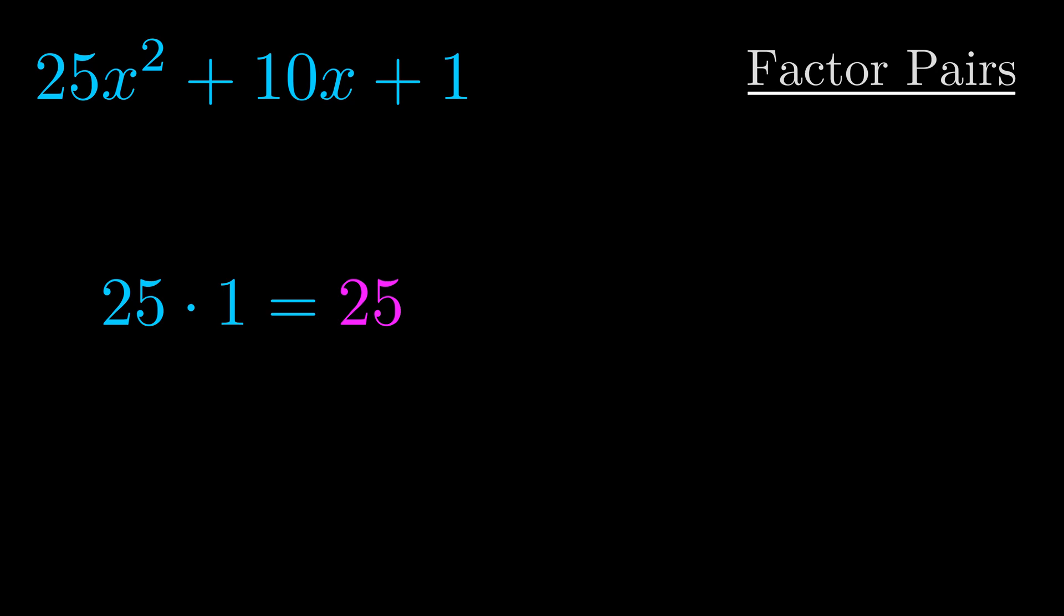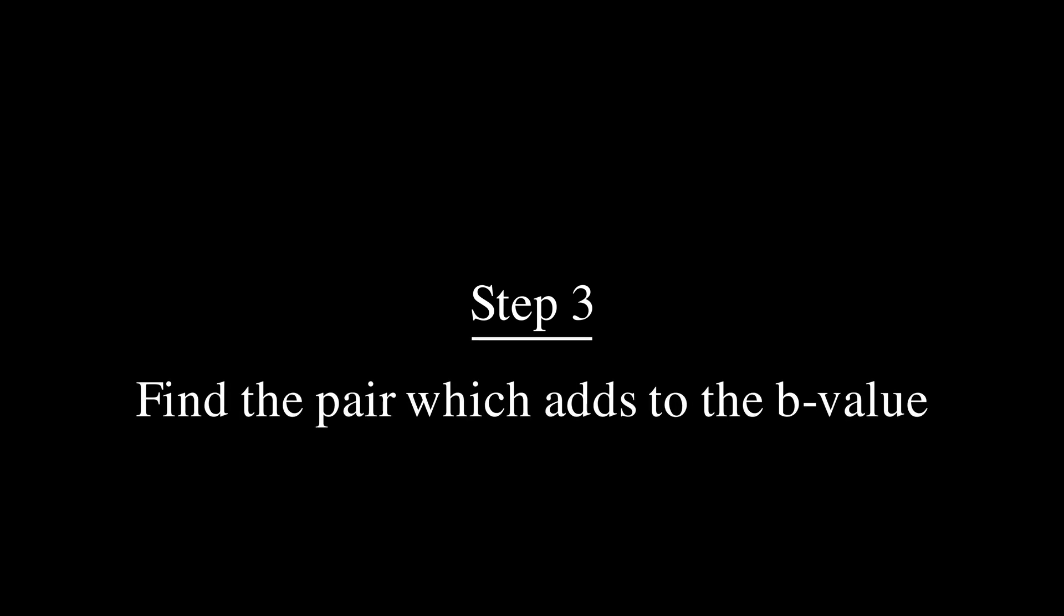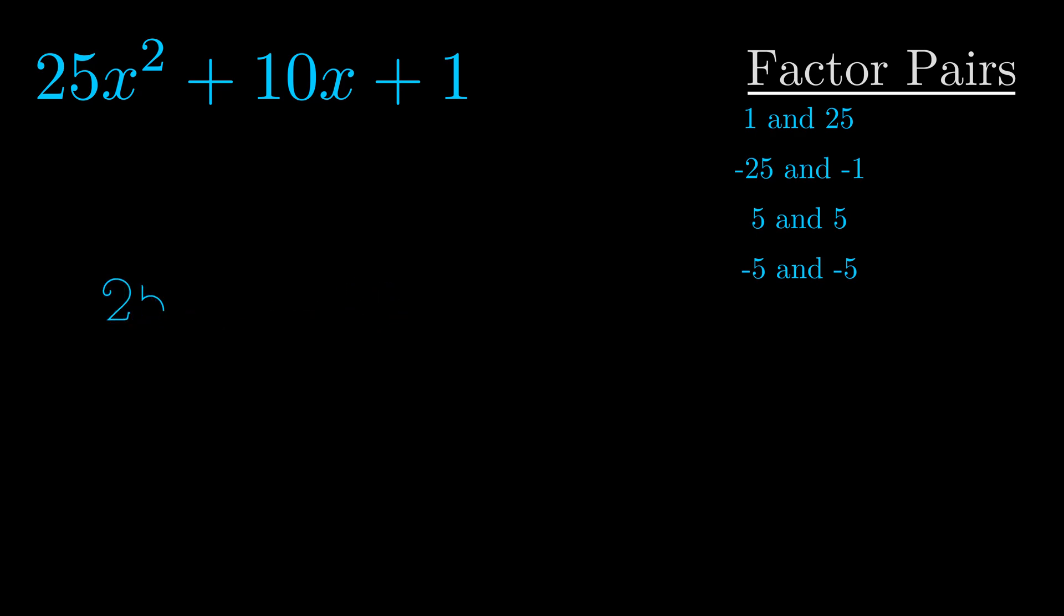Okay, here's what I came up with. Now once you have these factor pairs, the goal is to find which of these pairs adds to the b value. The b value is the coefficient on the x term. That's the middle term, the one that we haven't done anything with yet. And really this is the only factor pair that we need.